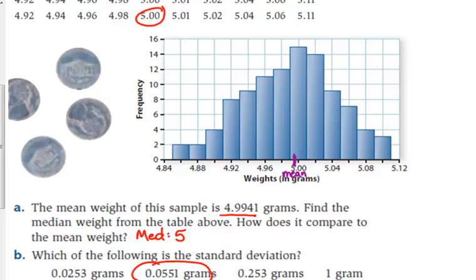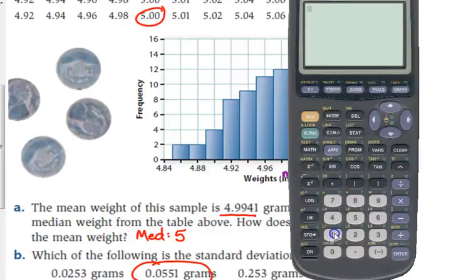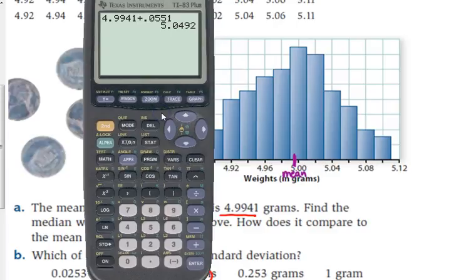So it wants one standard deviation above and one standard deviation below, so I need to take my mean, 4.9941, and I need to add my standard deviation of 0.0551. And I get 5.0492, so looking at my scale here, I would think that that would be a lot closer to five, but if you look at the scale, it's actually quite a distance. Here would be one standard deviation above.